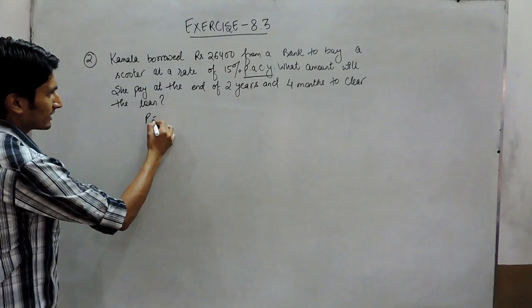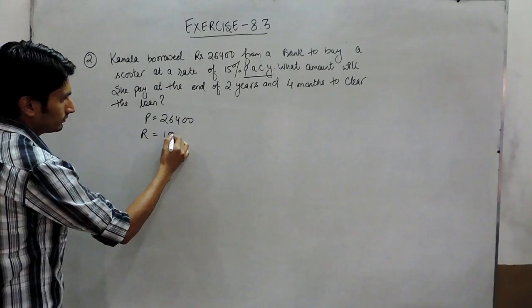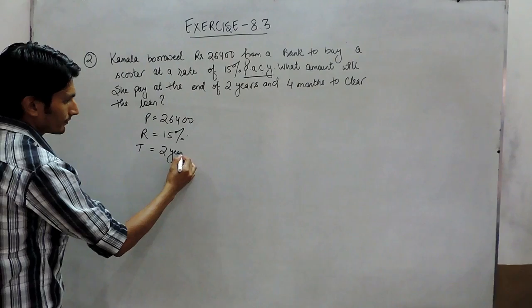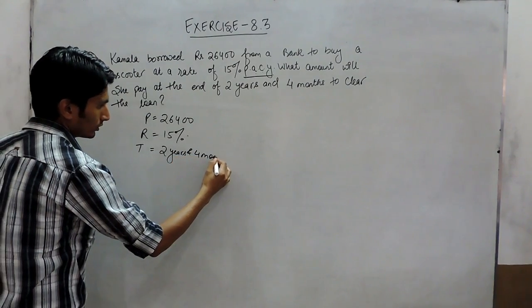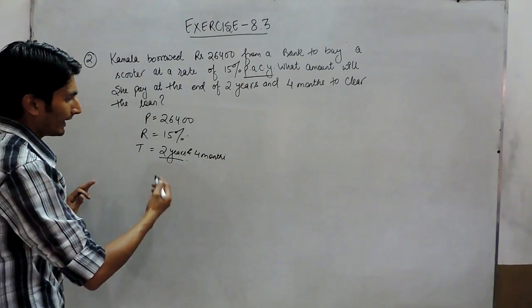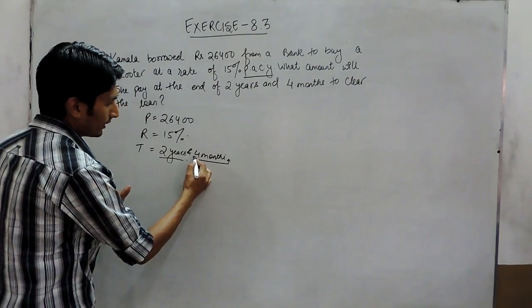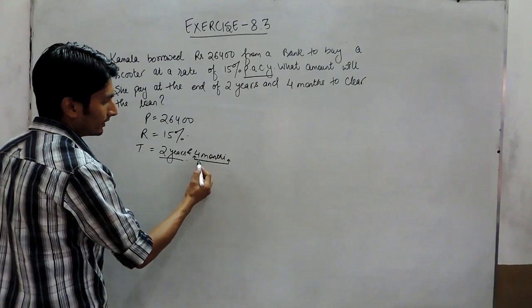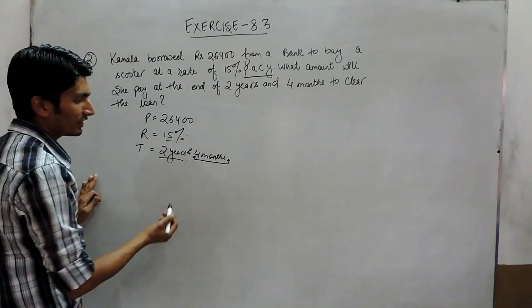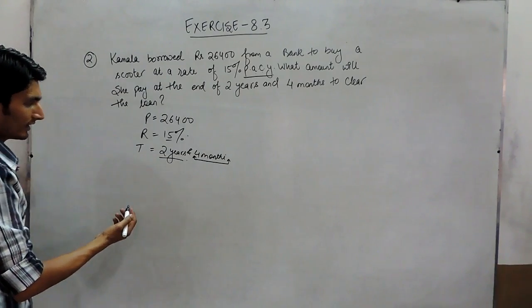In this case, the principal is 26,400, rate is 15%, and time is 2 years and 4 months. First, we'll find the amount for 2 years, and then that amount will act as the principal for the remaining 4 months. For that principal, we'll find the interest at 15%, and adding those will give us the final amount.